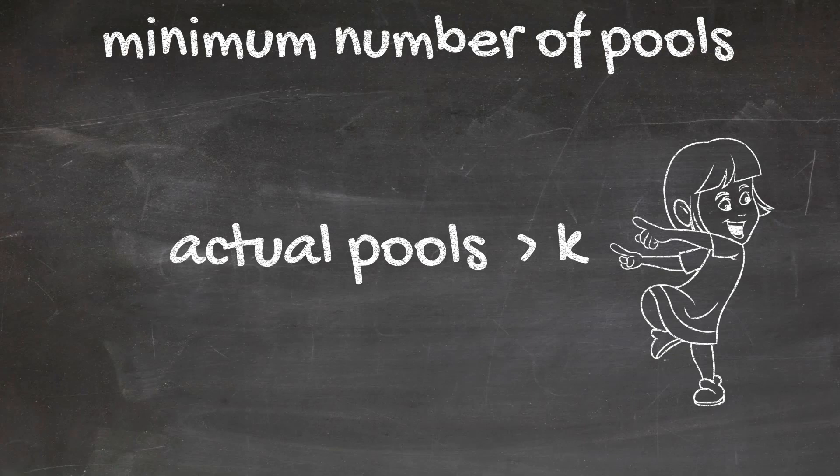Since there will always be people who think they can create a more successful pool, the actual amount of pools will be even more than the constant K.